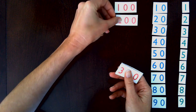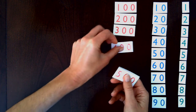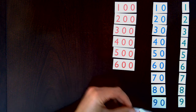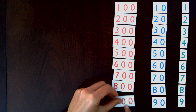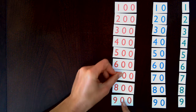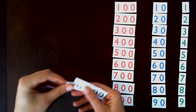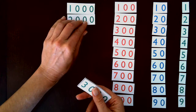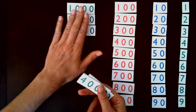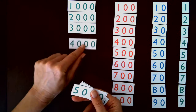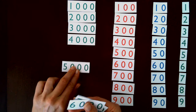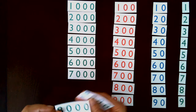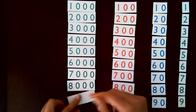One hundred, two hundred, three hundred, four hundred, five hundred, six hundred, seven hundred, eight hundred, nine hundred. One thousand, two thousand, three thousand, four thousand, five thousand, six thousand, seven thousand.